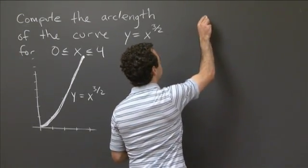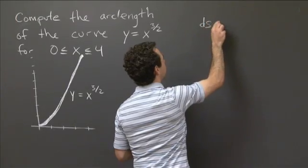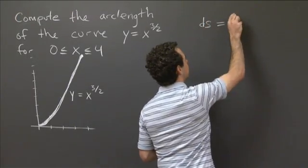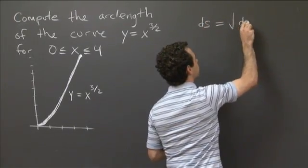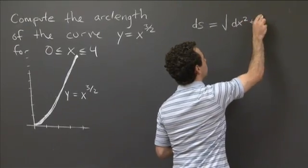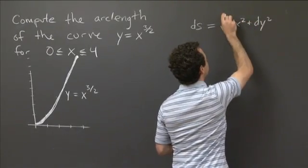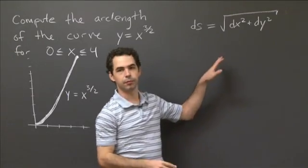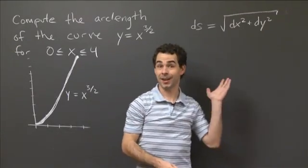So there are a couple different ways to remember it. One way that I like is to write ds equals the square root of dx squared plus dy squared. So this always reminds me of the Pythagorean theorem, so I find it easy to remember.